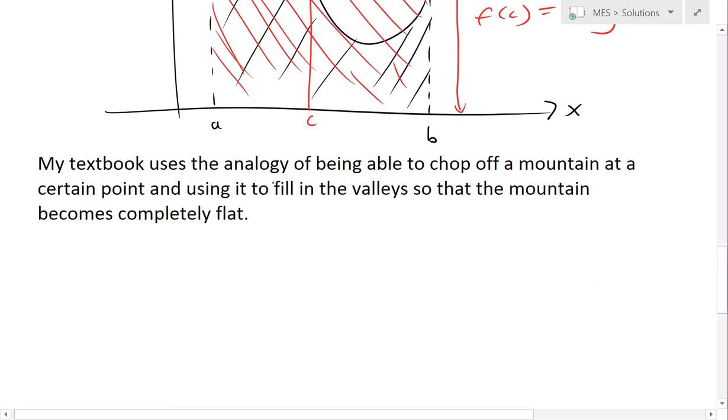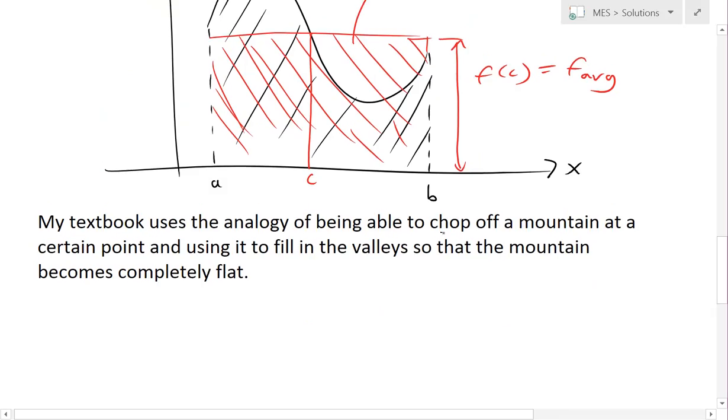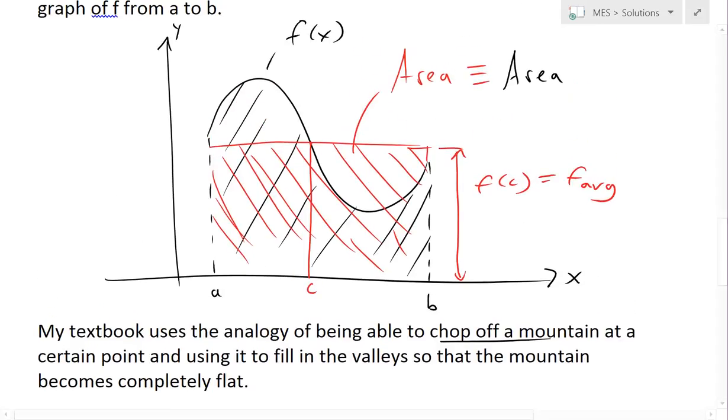Yeah, and my textbook actually uses the analogy of being able to chop off a mountain at a certain point and basically using it to fill in the valleys so that the mountain becomes completely flat. So that's basically what we did over here. We basically cut this off and put it here, but we cut it off at this point c. So we cut off the whole thing at this height and at this point.